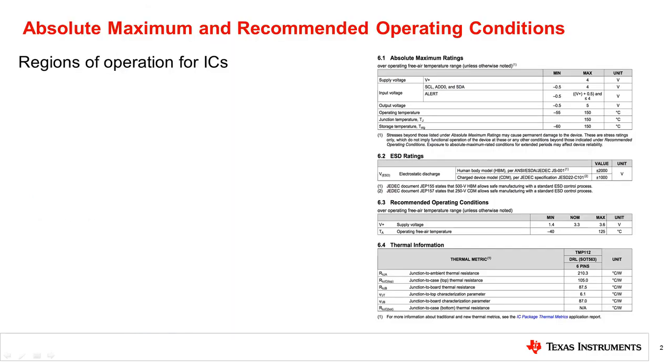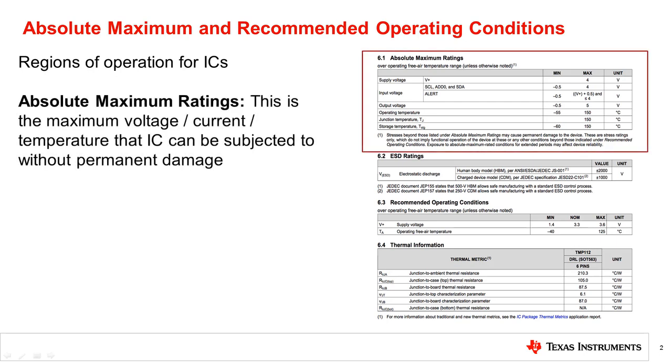For any semiconductor device, there are two sections in the data sheet: the absolute maximum rating, which is the maximum voltage, current, or temperature that applications need to avoid getting close to, else there could be irrecoverable damage to the device.